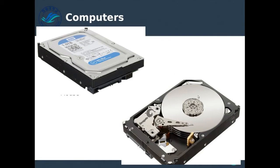RAM, for example, is very fast storage but very expensive. Hard drives are very slow storage but very cheap. So we use a combination — hard drives to save the data, and whenever we need it, we pull the data from the hard drive and load it into memory. Basically we just read magnetic signals off the platters or disks.